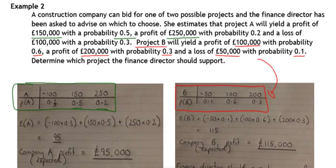And then it's just a case of working out the expected value of A using our normal formula that comes out to be 95. And the expected value of B using our normal formula that comes out to be 150.